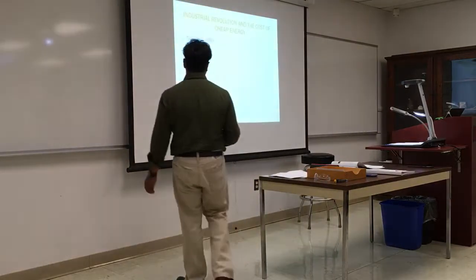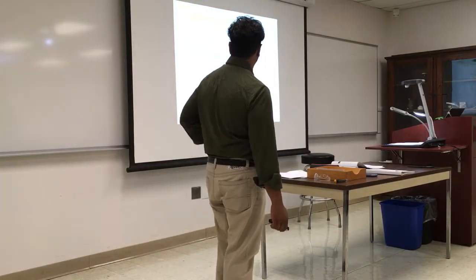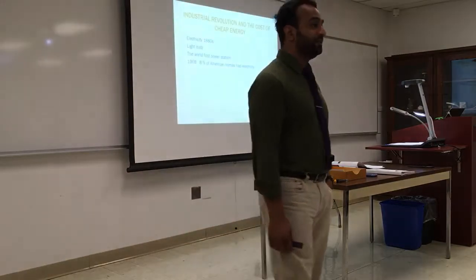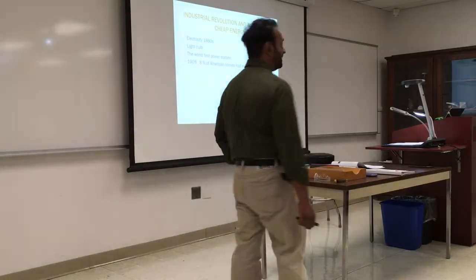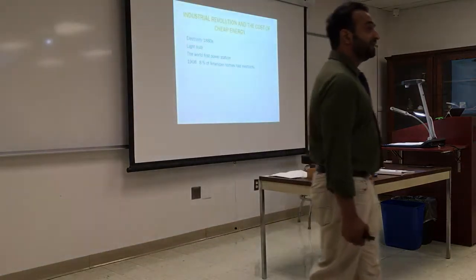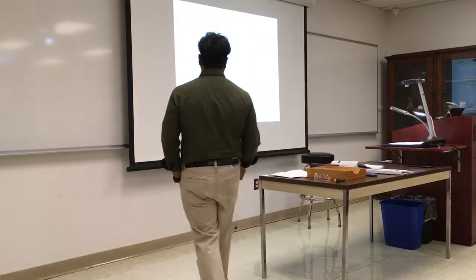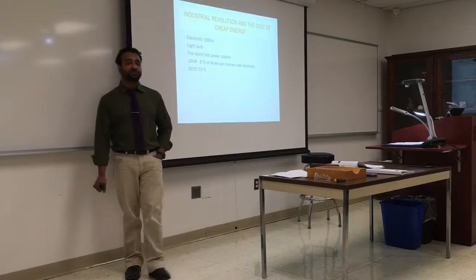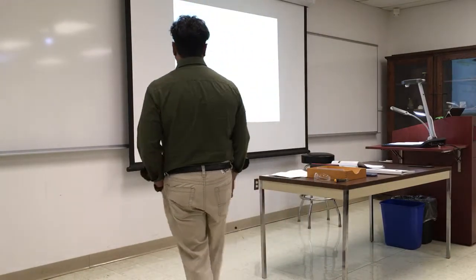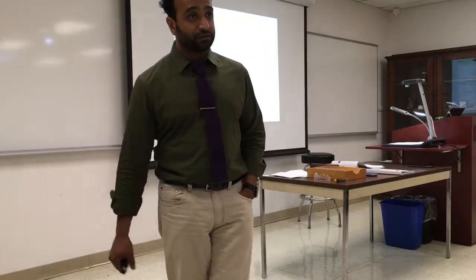Electricity came in the 1880s and the light bulb around 1900. The world's first power station came around that time, and by 1908 only eight percent of American homes had electricity — very small. But everybody wanted this luxury. By 1925 it was 50 percent of American homes with electricity, meaning more power stations, more transmission and distribution. By 1930, natural gas started — now it's about 50 percent of our source for heating and power generation.